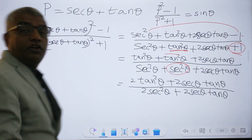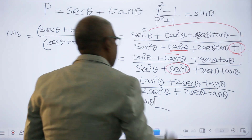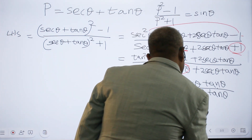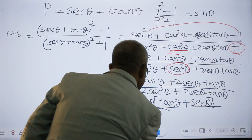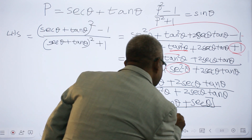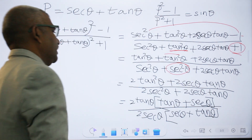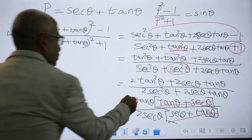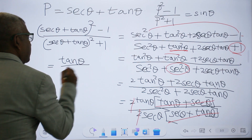In the numerator, 2 tan θ is common. Taking it out leaves tan θ plus secant θ. In the denominator, 2 secant θ is common. Taking it out leaves secant θ plus tan θ. Since tan θ plus secant θ and secant θ plus tan θ are the same, they cancel. The 2s also cancel, leaving tan θ over secant θ.